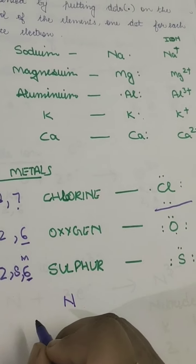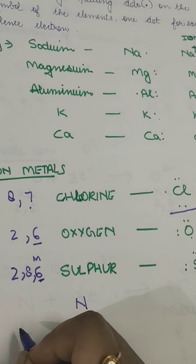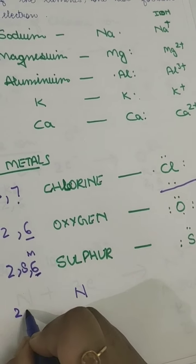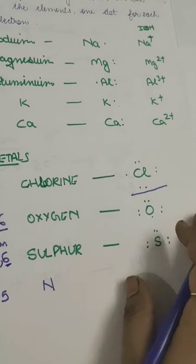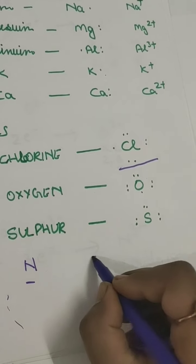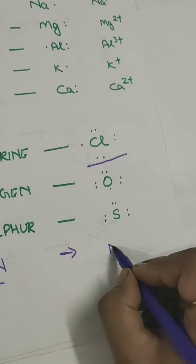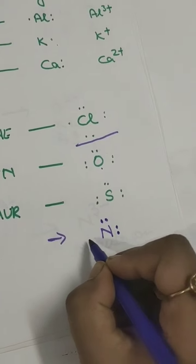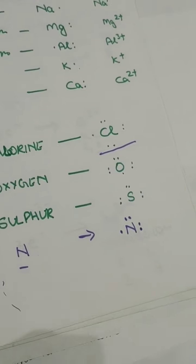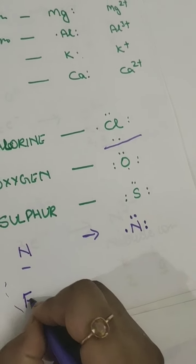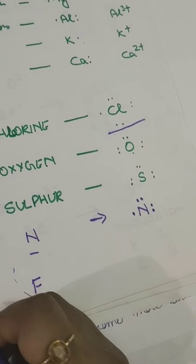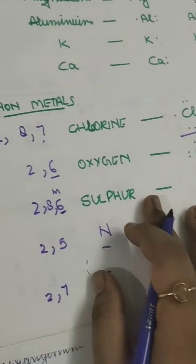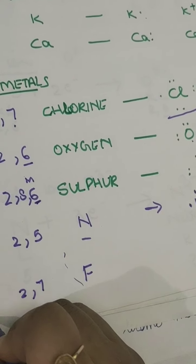Nitrogen has atomic number 7, and according to that it would be 2 and 5, so it has 5 electrons in its outermost shell - the electron dot structure would show 5 electrons. Fluorine has atomic number 9 with configuration 2 and 7, so it will have 7 electrons, same as chlorine, because chlorine and fluorine are from the halogen family.